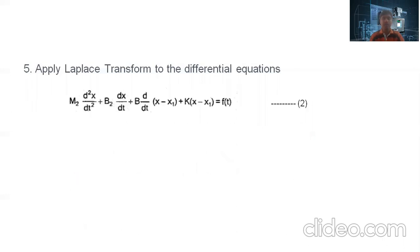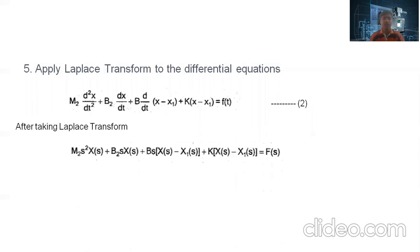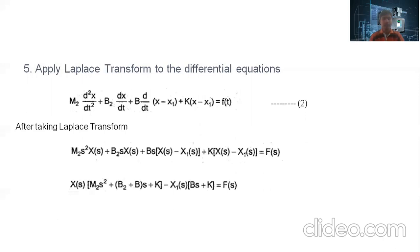Similarly, applying the Laplace transform to the second equation, we get: M2·s²·X2(s) + B2·s·X2(s) + B·s·(X2(s)−X1(s)) + K·(X2(s)−X1(s)) = F(s). Taking X2(s) and X1(s) common: X2(s)·(M2·s² + (B2+B)·s + K) − X1(s)·(Bs+K) = F(s). This is equation 4.